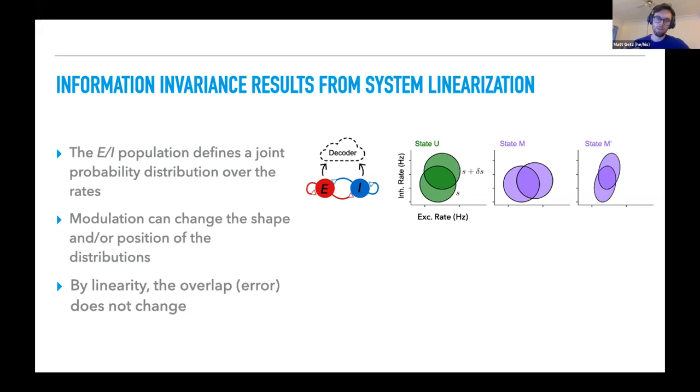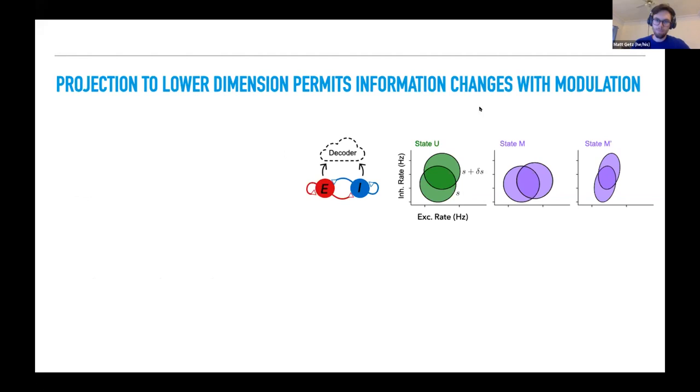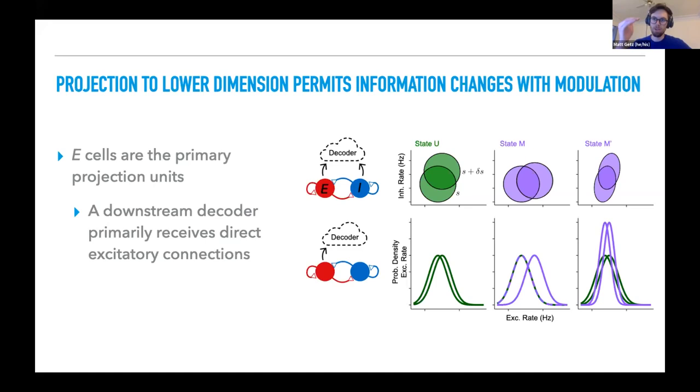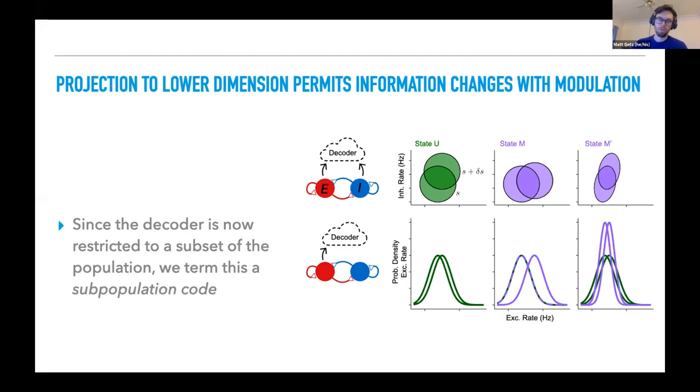Modulation can change the shape or the position of these distributions. So modulation might rotate these distributions or rescale them. But yet, by the linearity of our system decoder, the overlap or the error of a discriminator is not changing through each of these states. And this sort of gets at this invariance. But yet, this picture might be a little disconcerting because what does our decoder mean if we're reading out from both E and I? We know that E cells are the primary projection units along the cortical hierarchy. So if our decoder is representing a downstream region, then really the picture should look more like this. This corresponds to a projection of these distributions down onto the excitatory axis. Now we see that the distributions over the excitatory rates can change as a function of our modulation. In this case, the error is going down. So now we can see an improvement in information.